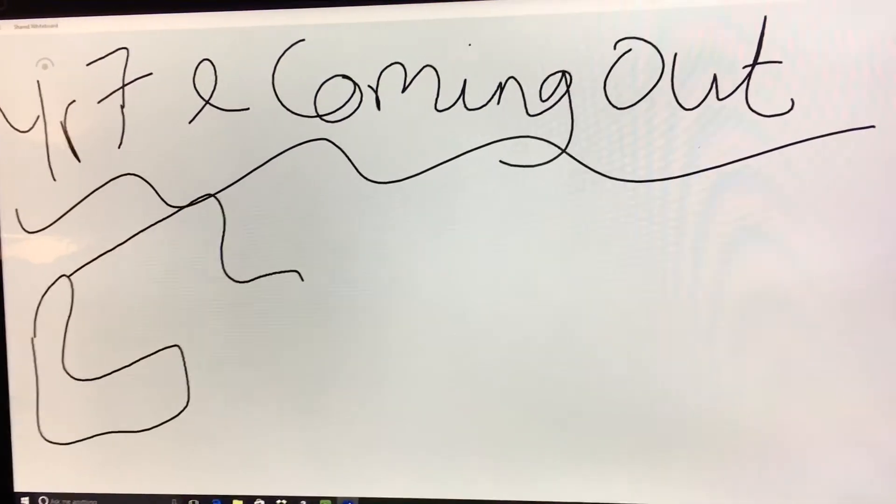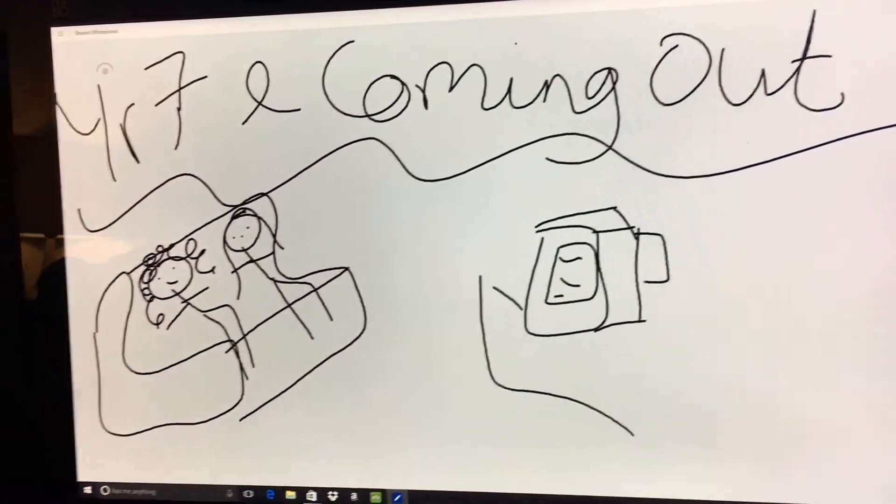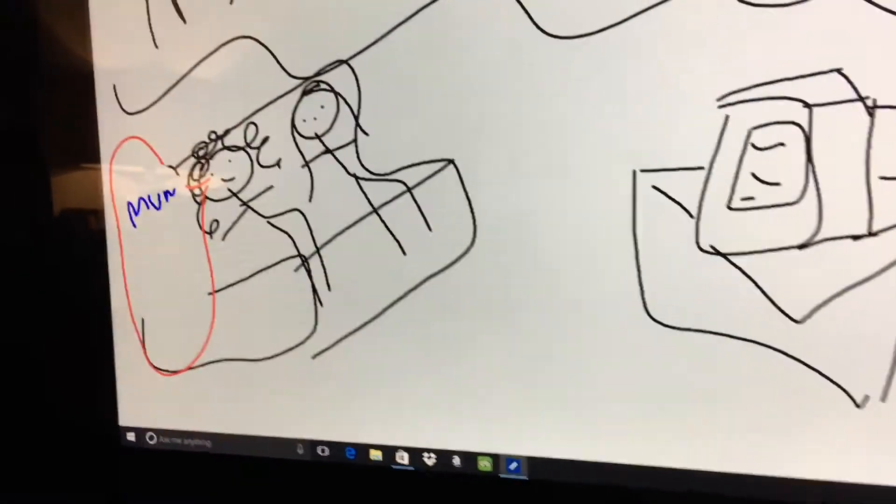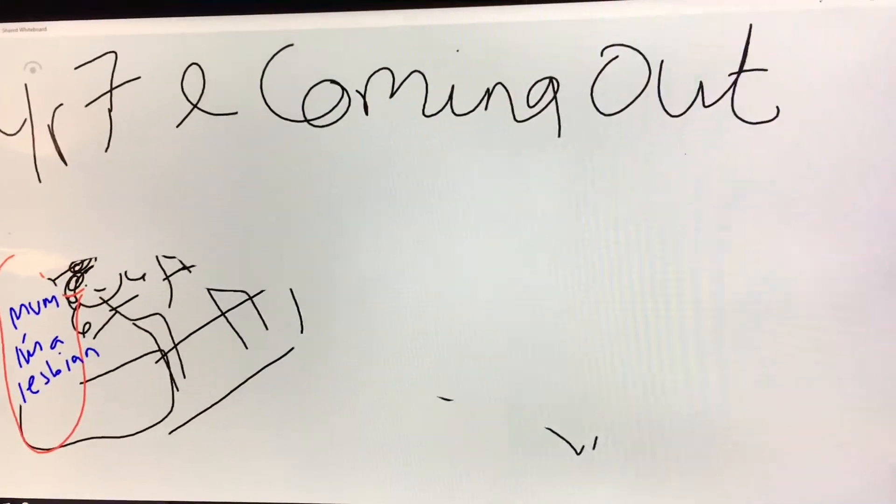Year 7 and coming out, I actually came out to my mum first. We were watching Hollyoaks and she was pretty cool about it, to be honest. I came out as a lesbian to start with.